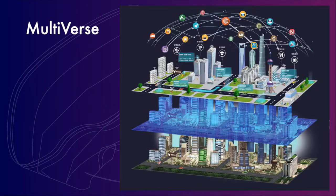Now, trends and directions. The first trend is about the multiverse, also known as multiple universe. Basically, this is the time when we have the real world and then we have a digital version of our real world. Finally, we can also try to augment our physical world with digital information.